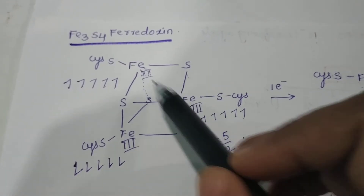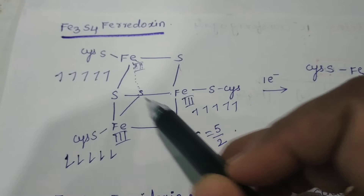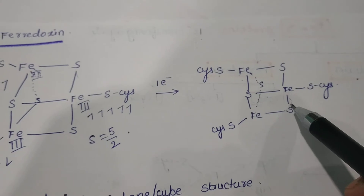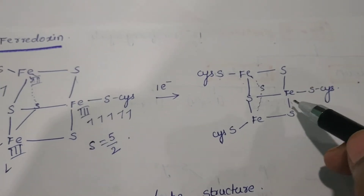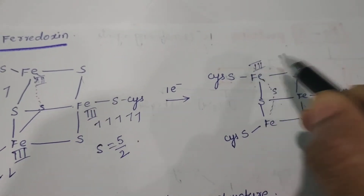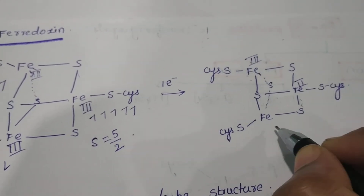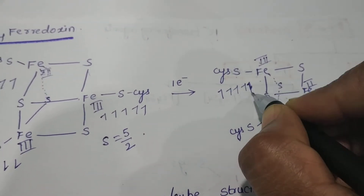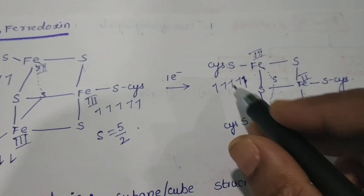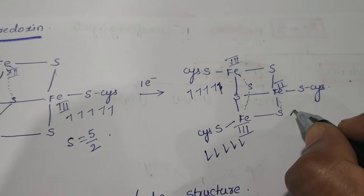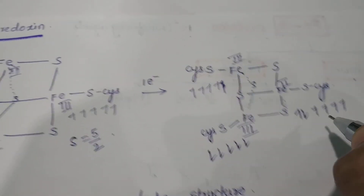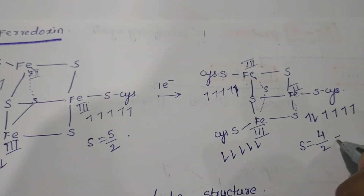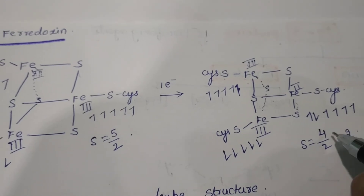Fe-S-Fe bonds are present in this Fe3S4 ferredoxin. It will take one electron, and this is the reduced form of this protein, which is also paramagnetic. One iron becomes reduced to Fe2+. Counting electrons: two irons have five each (spins cancel), and the reduced iron has four electrons, giving S equal to four-half, which equals 2. This is paramagnetic and ESR active.